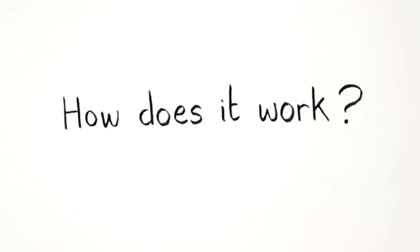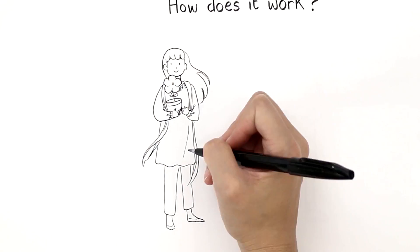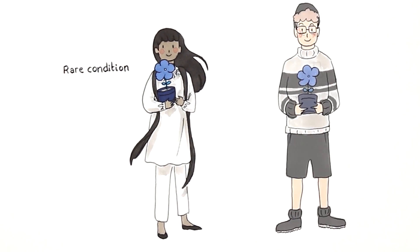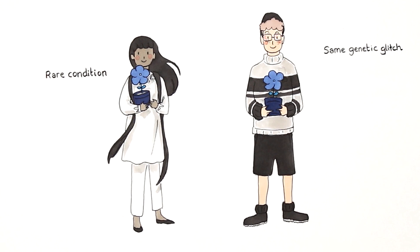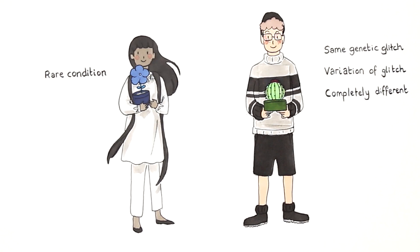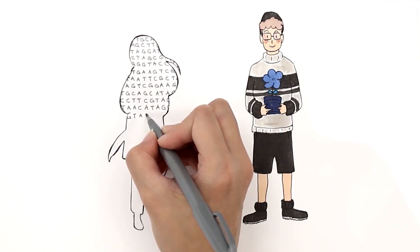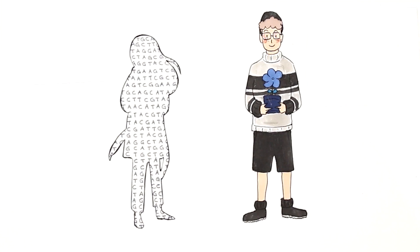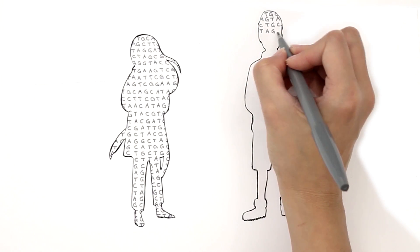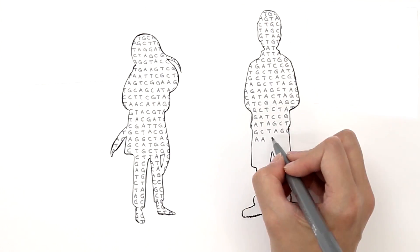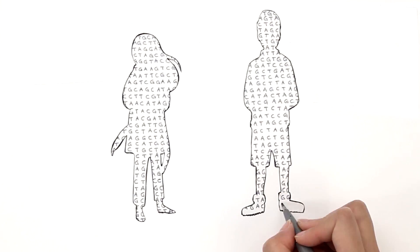So how does it work? Meet Lily. She has a rare condition. It could be caused by the same genetic glitch as Jack, who has the same symptoms, or it could be a variation of that glitch, or even something completely different. First, they start with a readout of all three billion letters of Lily's genetic code, which takes a few days. Because humans are 99.8% the same, they only need to look in the four million places where Lily is different.